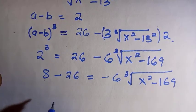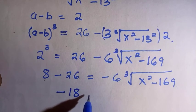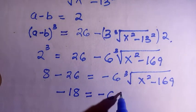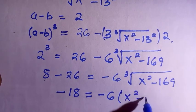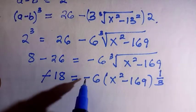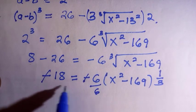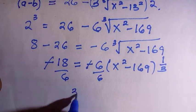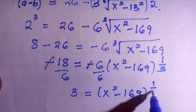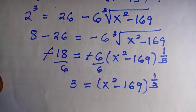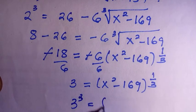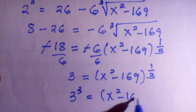Dividing both sides by negative 6: negative 18 divided by negative 6 gives 3. The negatives cancel, so 3 equals (x² minus 169) raised to the power of 1/3. Now take the cube of both sides to cancel the 1/3 exponent.